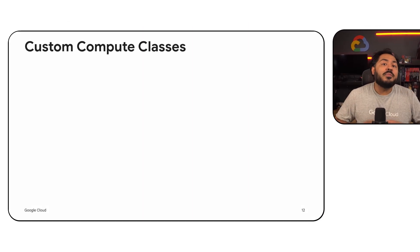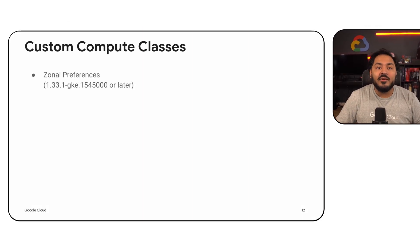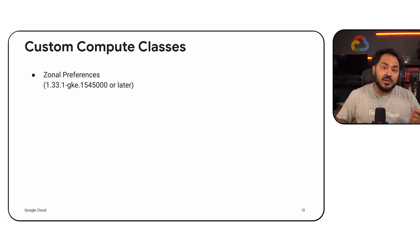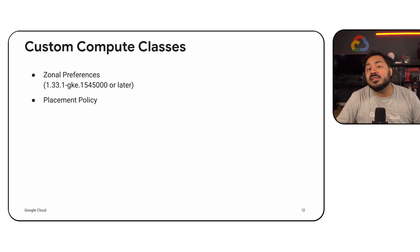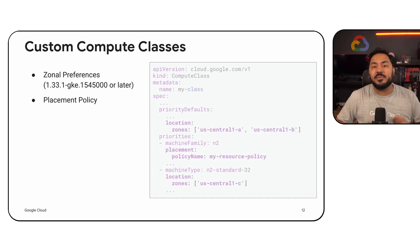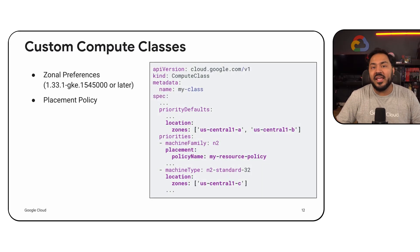Custom Compute Class got some new enhancements. With zonal preferences, you can now specify a zone with reconciliation to preferred zone for each one of your priorities. Placement Policy allows you to support Compact Placement Policy, which is important for HPC use cases.